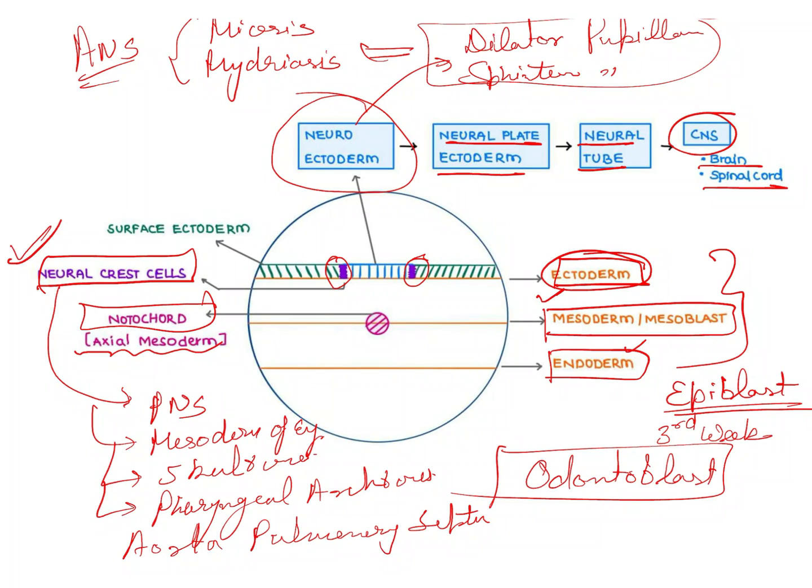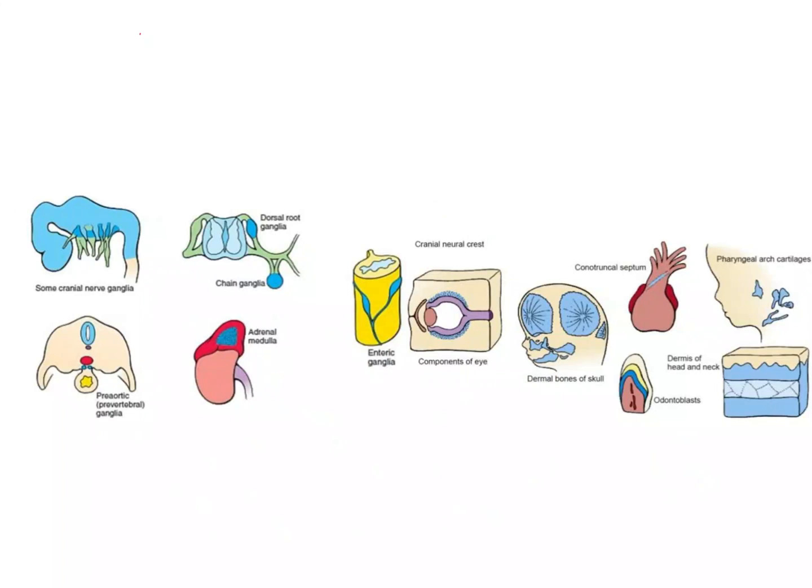Since I am discussing neural crest cells, I should discuss a very important syndrome known as DiGeorge syndrome. This syndrome is characterized by the failure of neural crest cells to migrate towards the head and neck. When the cells cannot migrate towards the head and neck, there will be problems with what?